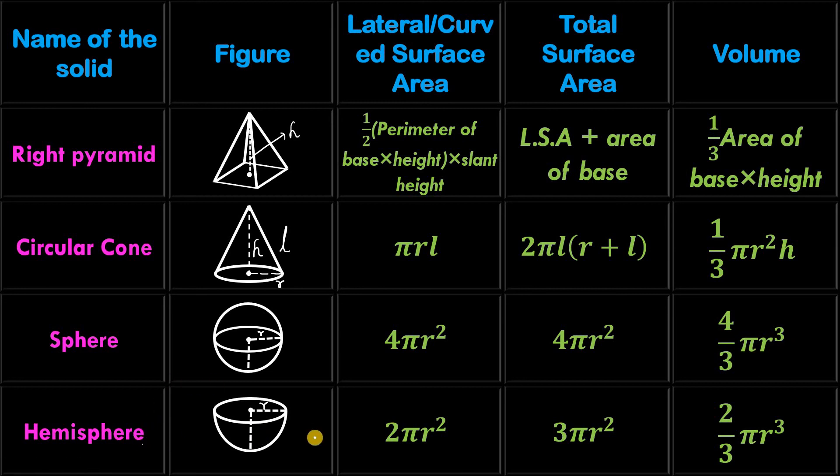Next, it is hemisphere. This is half of the sphere. It's also a curved shape. So CSA is 2 pi R square. And its total surface area is 3 pi R square. And its volume is 2 by 3 pi R cube.